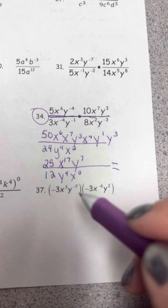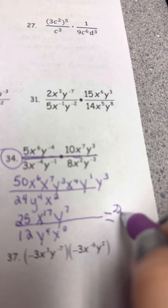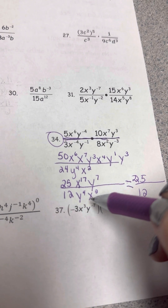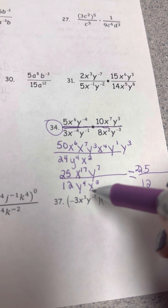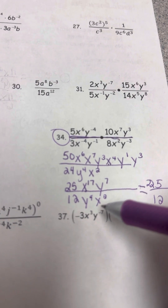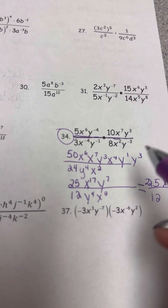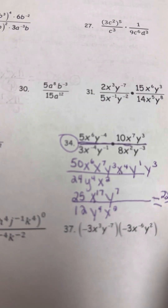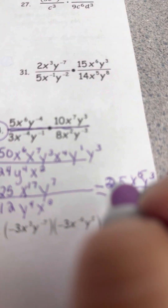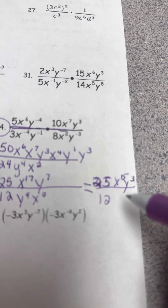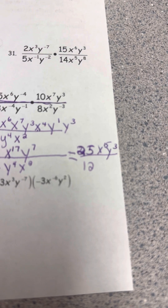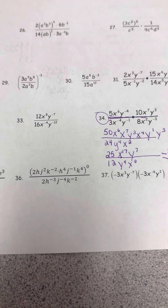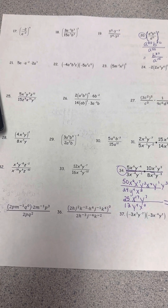So I have 25 over 12, x to the 17th over x squared, and y to the seventh over y to the fourth. Imagine 17 x's in the numerator and 2 in the denominator — 2 cancel, leaving x to the 15th in the numerator. Seven y's versus four y's — 4 cancel, leaving y to the third in the numerator. The final simplified answer is 25x to the 15th y to the third over 12. No repeated bases, no negative exponents, no parentheses. Remember, you have a quiz on this next block.